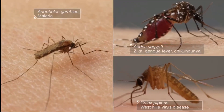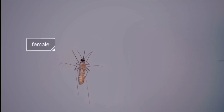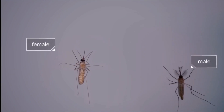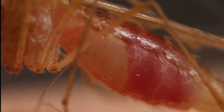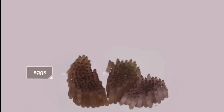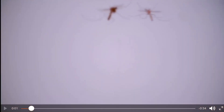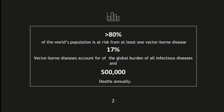Malaria can infect anyone — it doesn't matter who you are. Alexander the Great, Genghis Khan, Tutankhamun — some of the great figures who have been infected by vector-borne diseases. Greater than 80% of the whole population is at risk from at least one vector-borne disease. Vector-borne diseases account for 17% of the global burden of all infectious diseases and cause nearly 500,000 deaths annually.